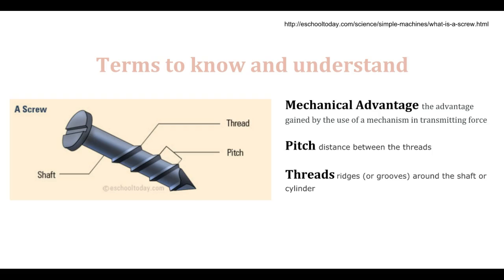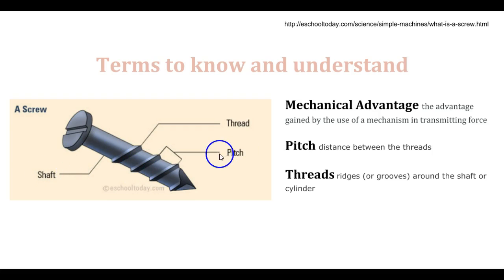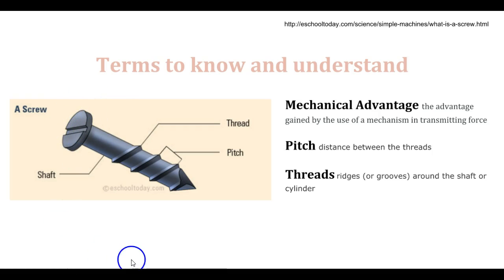Let's look over here at our diagram. We see the shaft — that's the cylinder part right here. We see our thread, which is the groove part that is extruded from the shaft. And then we have our pitch, which is the actual measurement between each thread. We also have the top of our screw, which is normally where we're going to apply our force to turn the screw and make it work.